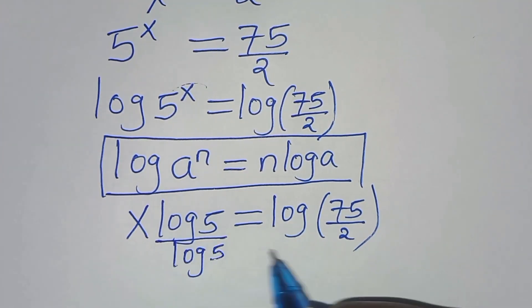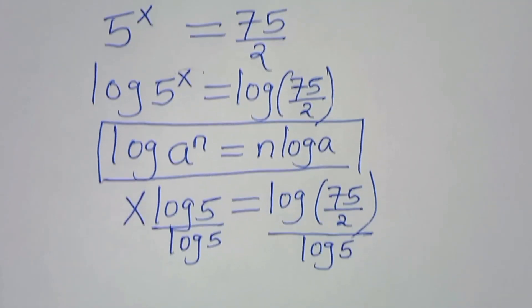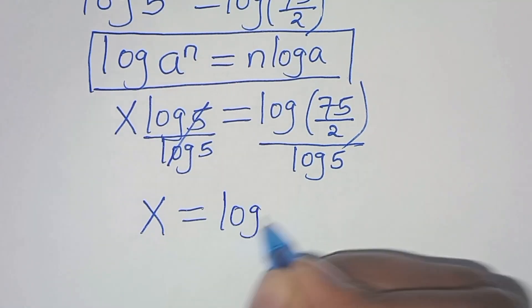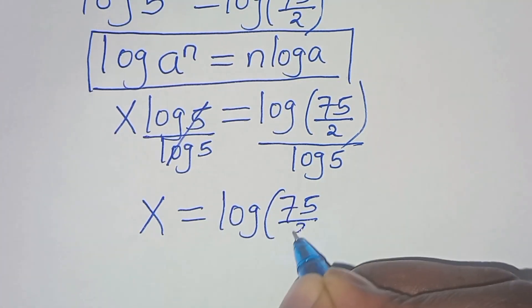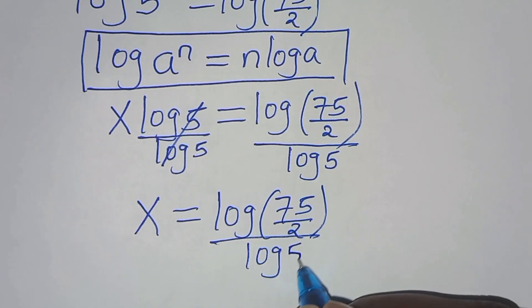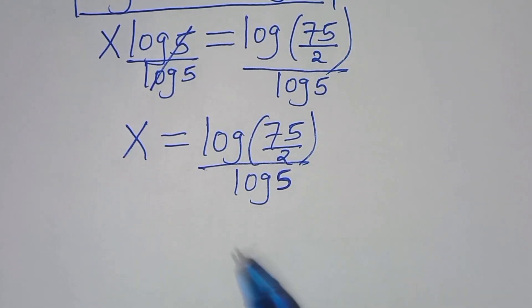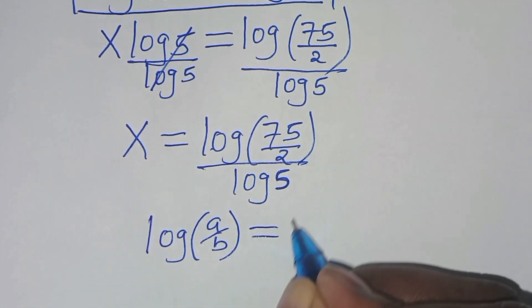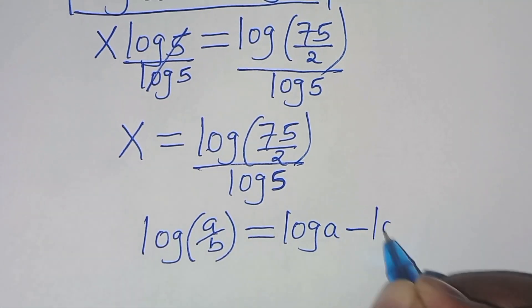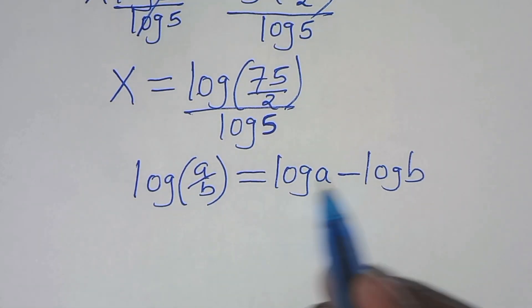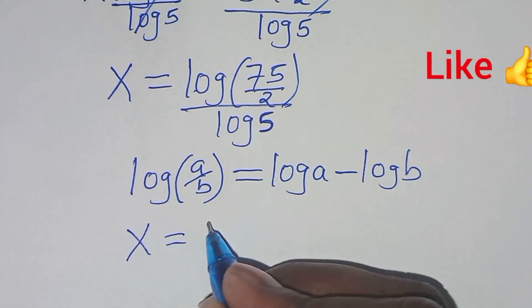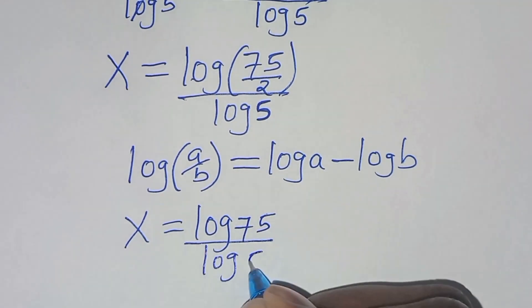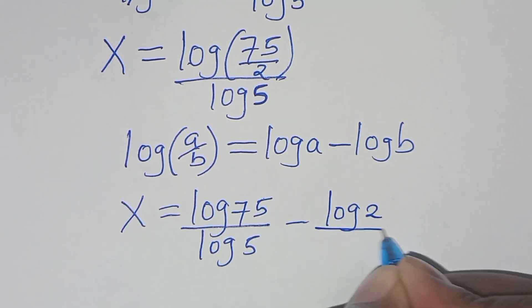Dividing both sides by log5, we get x equals log(75/2) divided by log5. Now log(75/2) is in the form log(a/b), which equals log(a) minus log(b). So x equals log75 divided by log5, minus log2 divided by log5.